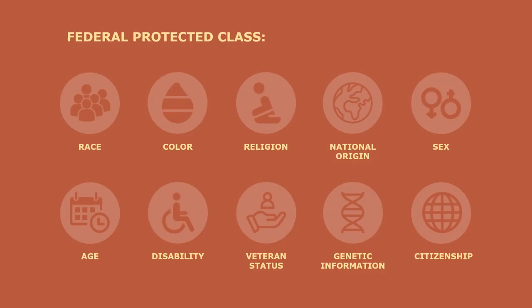Federal protected classes include the following: race, color, religion, national origin, sex, age, disability, veteran status, genetic information, and citizenship.